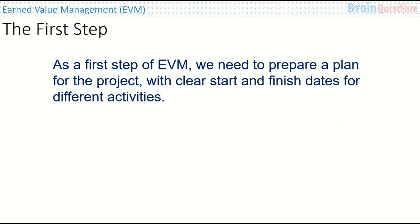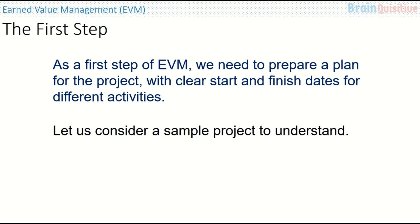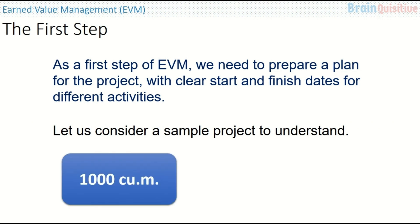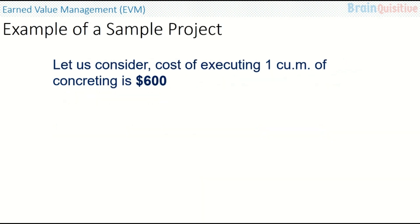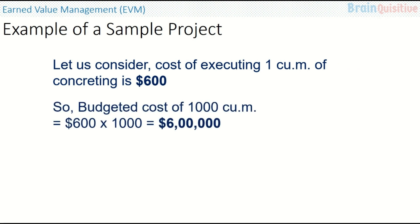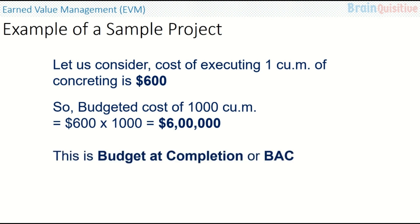As a first step of EVM, we need to prepare a plan for the project with clear start and finish dates for different activities. Consider a sample project where we have to do 1000 cubic meters of concreting over a duration of 5 months. The cost of executing 1 cubic meter of concreting is 600 dollars — this is the budgeted cost per unit. So the budgeted cost of 1000 cubic meters is 600 multiplied by 1000, that is 600,000 dollars. This is the Budget at Completion, or BAC.